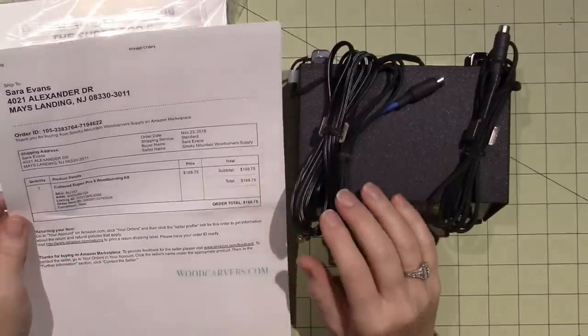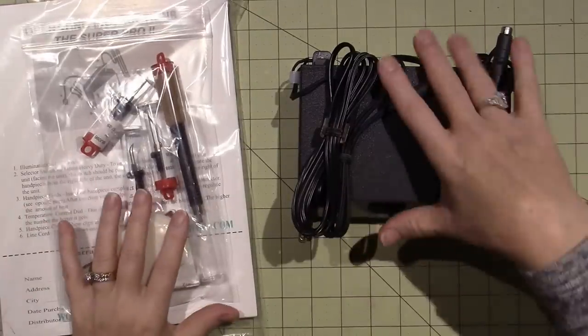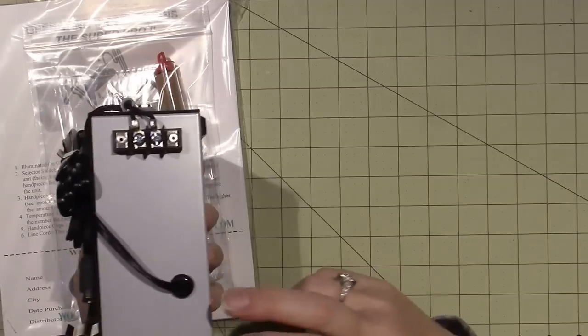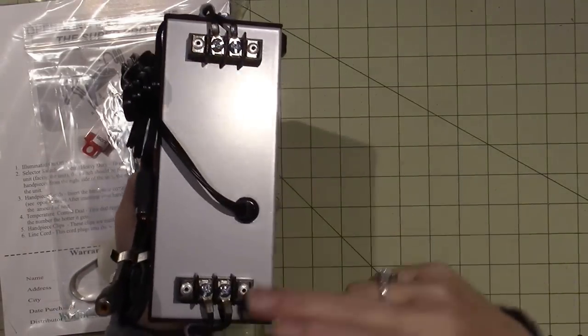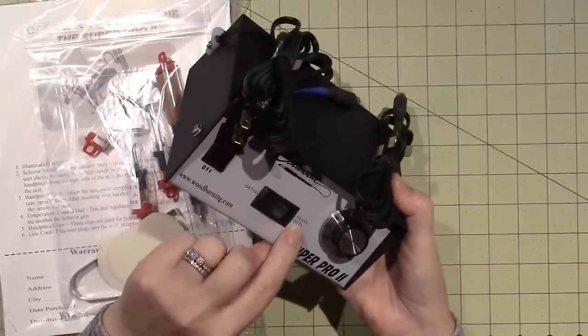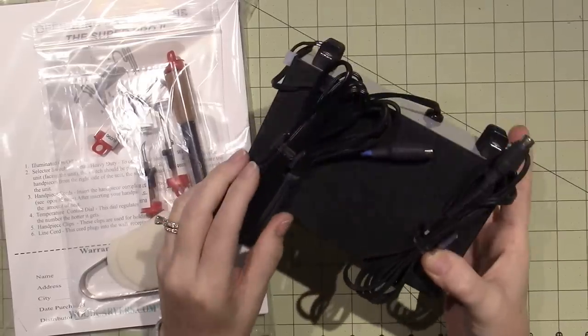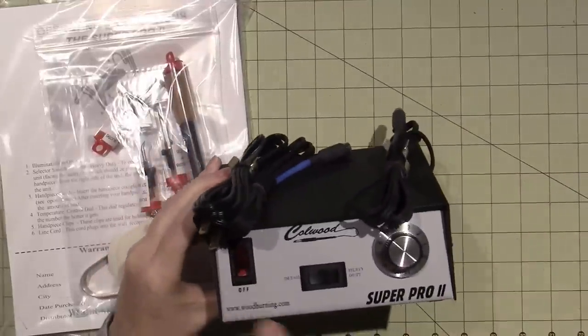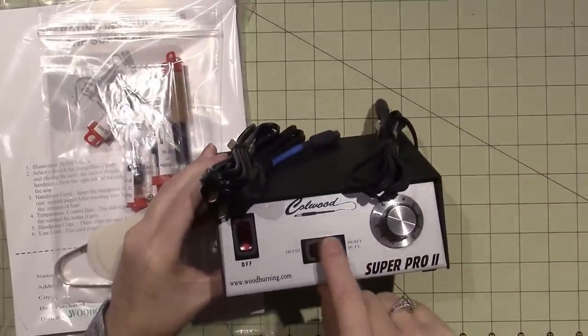I didn't pay shipping, so free shipping. The machine has dual power sources - there's two power source connections. This button has detail and heavy duty settings, and there's a gauge here as well. I have to read up on it and I'll get back to you. It has an on-off switch, a dial, and a detail and heavy duty switch.